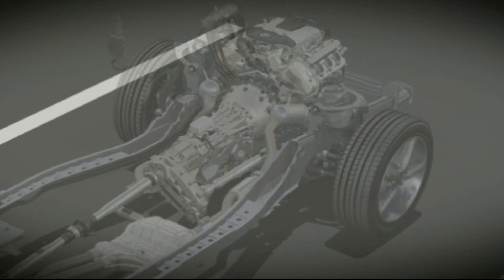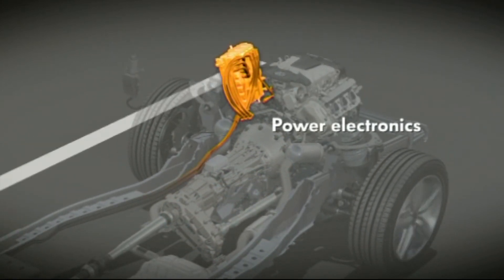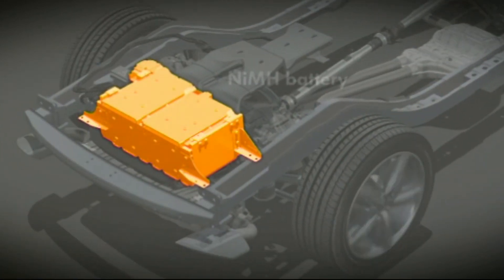The intelligent power electronics ensure that the correct current flows at all times, both when driving with the electric motor and when charging the battery. The electric motor gets the necessary voltage from the high voltage battery.